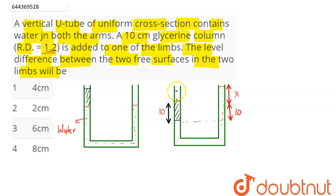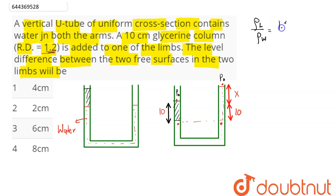On the glycerin side, the height is 10, and on the water side below, there will be a common water level. According to Pascal's Law, in the same liquid at the same height, pressure remains the same. So this pressure is P0 (atmospheric) on both sides, meaning P1 equals P2.